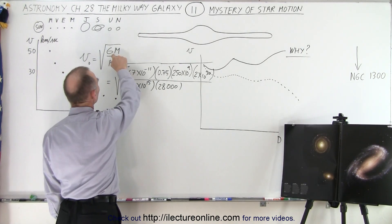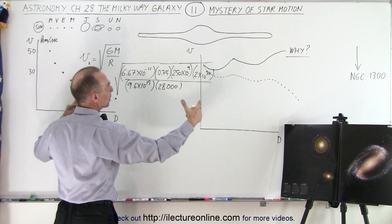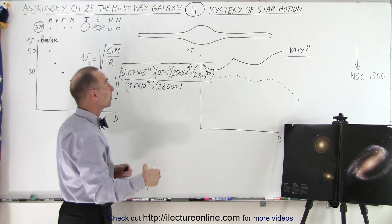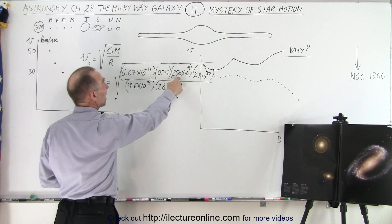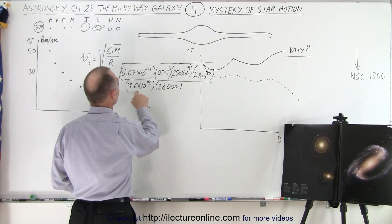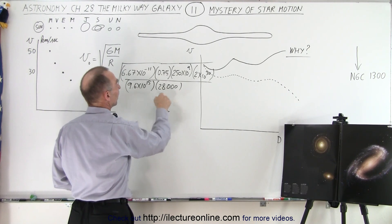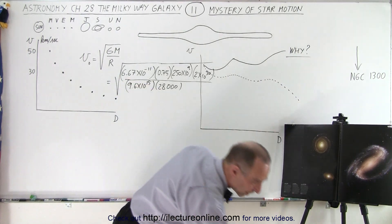So G, the universal gravitational constant, the mass inside - I would say about three quarters of the galaxy is inside the orbit of the sun. Three quarters times the number of solar masses in the galaxy times the mass of one sun. That's the number of light years, one light year in meters, and there's 28,000 light years.